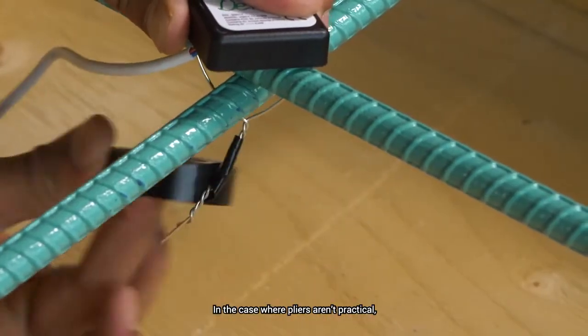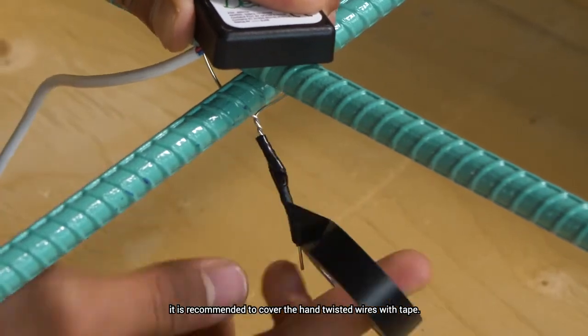In the case where pliers aren't practical, it is recommended to cover the hand twisted wires with tape.